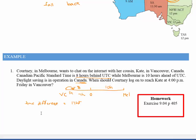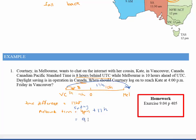Courtney needs to reach Kate at 4 p.m. Friday night in Vancouver, so we need to find the Melbourne time. Melbourne is 17 hours ahead, so we add 17 hours to 4 p.m. Friday. Adding 12 hours would make it 4 a.m. Saturday, and then adding the remaining 5 hours gives us 9 a.m. Saturday Melbourne time. So Courtney should log on at 9 a.m. Saturday.